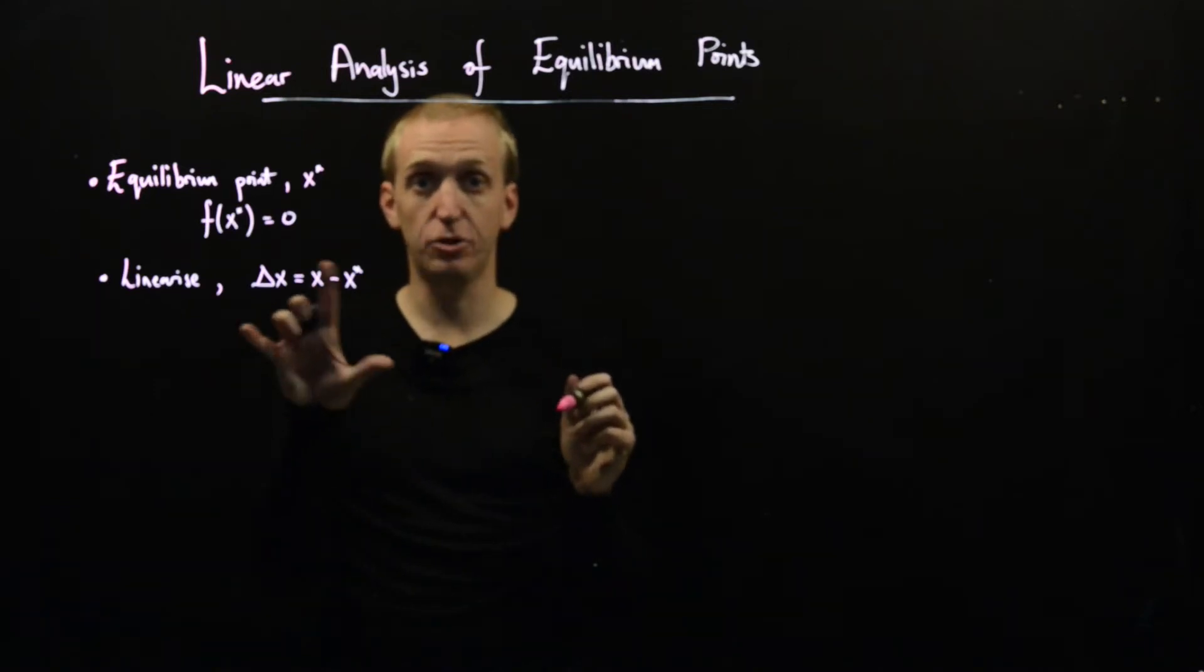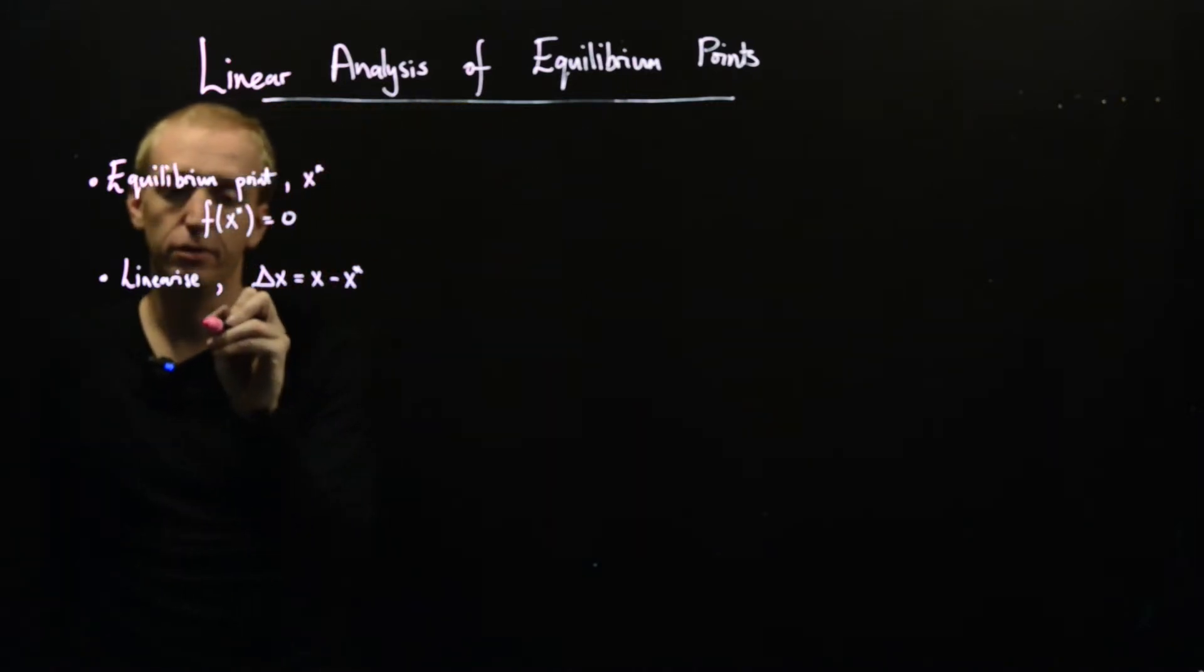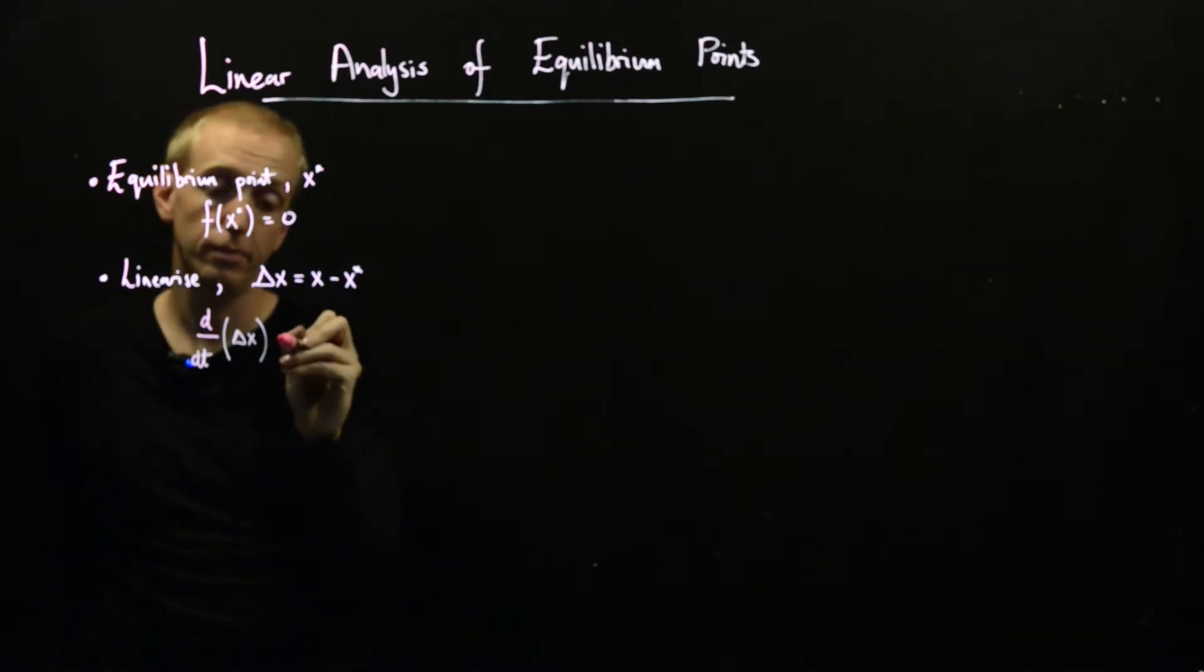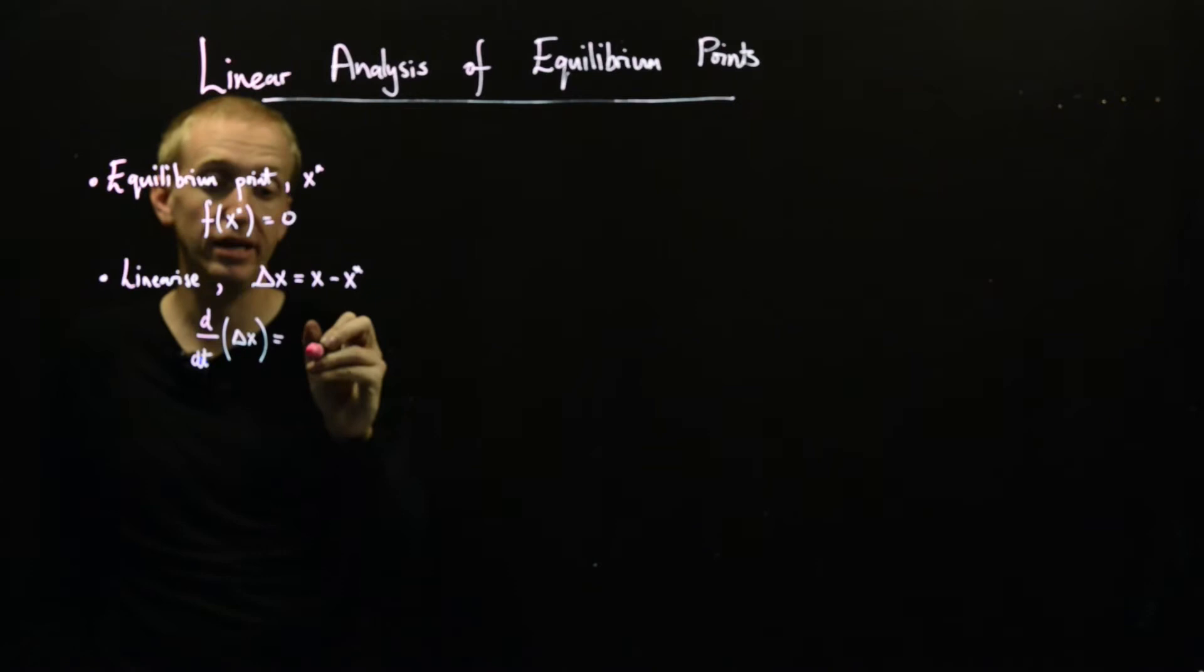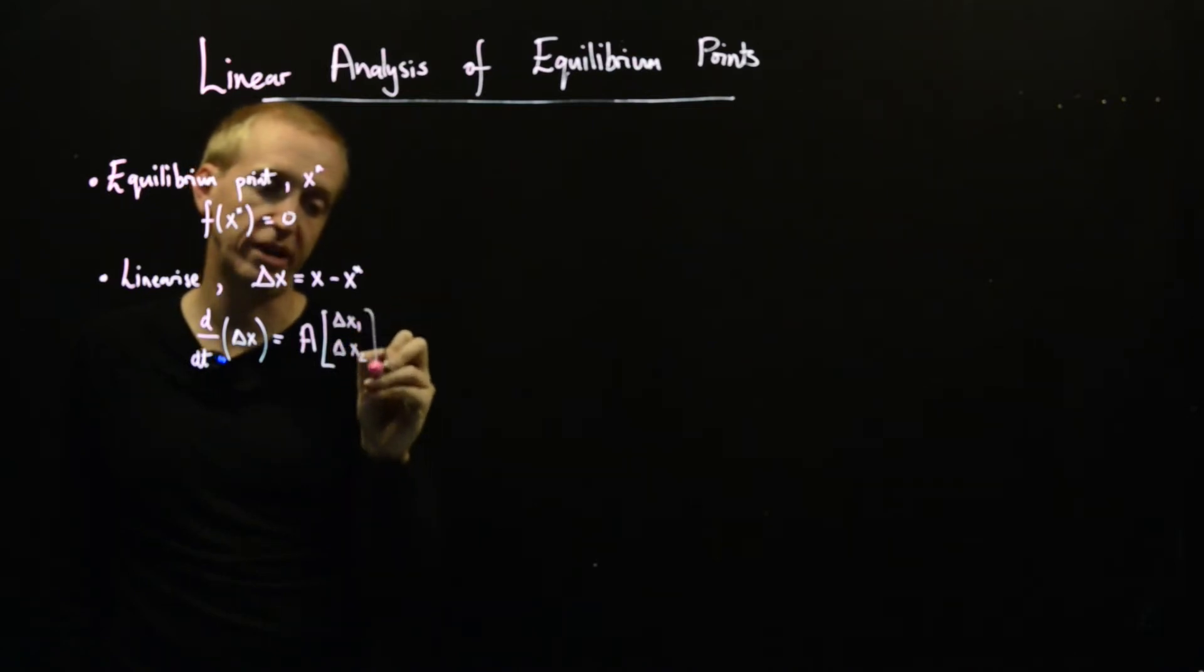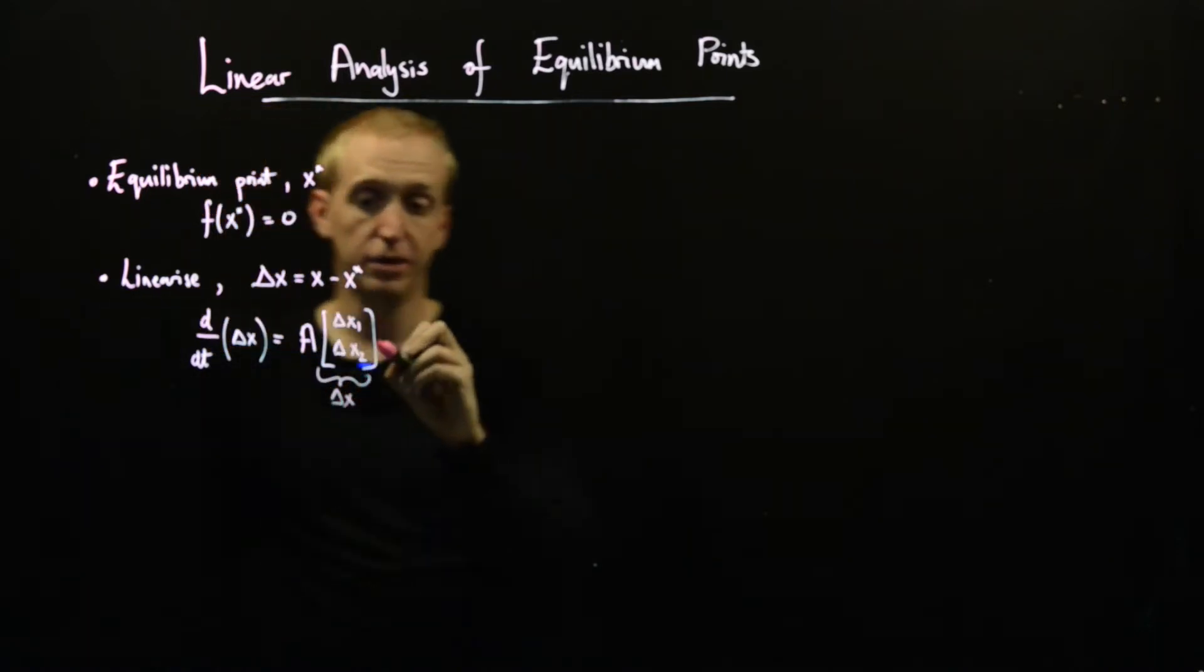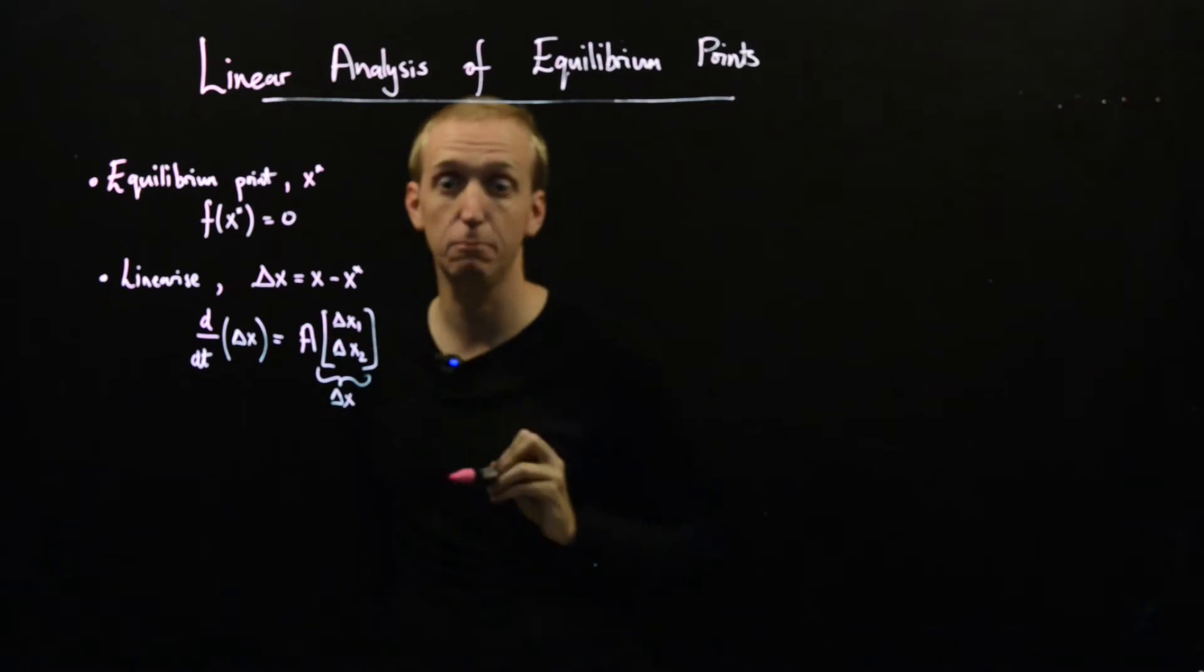And the linearization is just a way of rewriting our initial system in this form. So we write things in our new coordinates and we rewrite our function in terms of delta x. We rewrite it as some matrix A times vector delta x1, delta x2, but in general this is just our vector delta x and this is our linear term. So we have a matrix multiplied by delta x1 and delta x2 and this doesn't depend on the state.